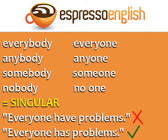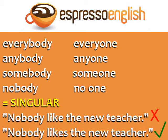The words everybody, anybody, somebody, and nobody, as well as everyone, anyone, someone, and no one, are all singular. The sentence 'everyone have problems' is incorrect — the correct sentence is 'everyone has problems.' Even though 'everyone' refers to many people, it is treated as a group and takes the singular verb. 'Nobody like the new teacher' is also incorrect; the correct form is 'nobody likes the new teacher.'